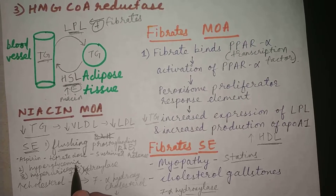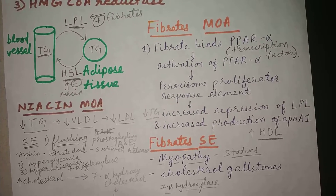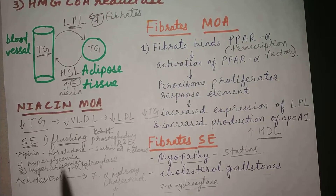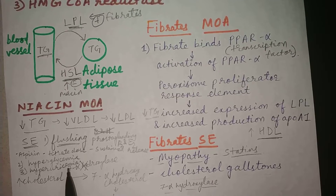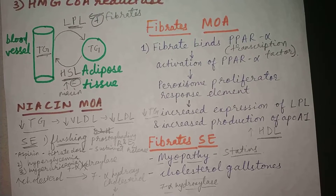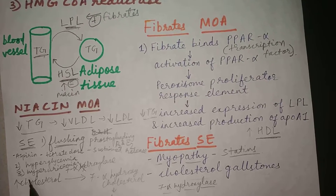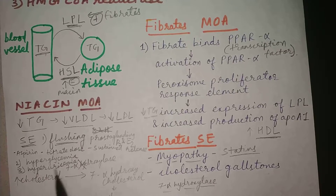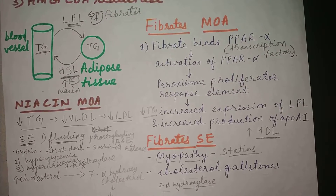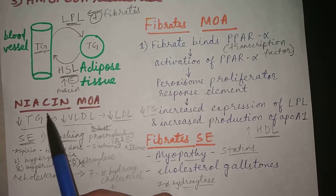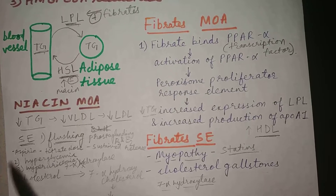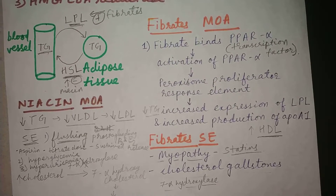Other side effects of niacin include hyperglycemia and hyperuricemia. The mechanism of hyperglycemia is not exactly understood. For hyperuricemia, niacin decreases secretion of uric acid in the urine, leading to increased uric acid levels and sometimes gout attacks. That was all about fibrates and niacin; the next video will discuss other lipid lowering drugs.